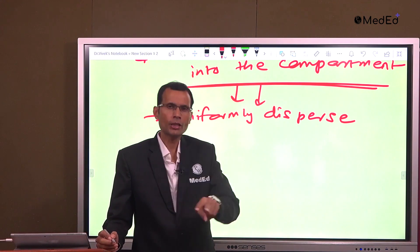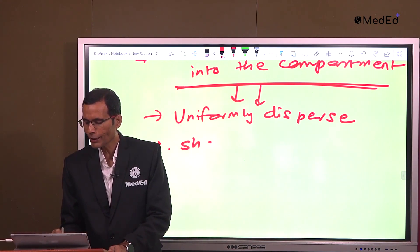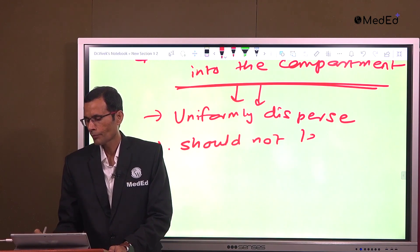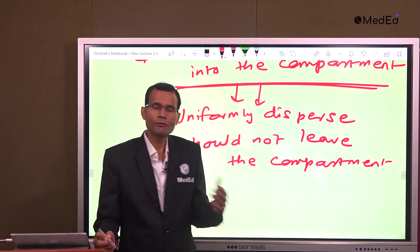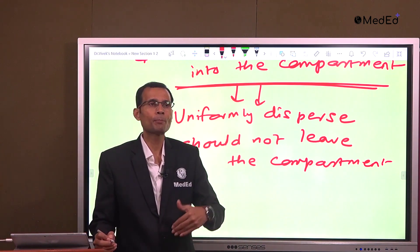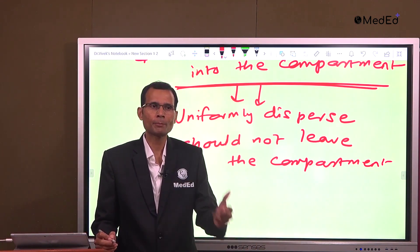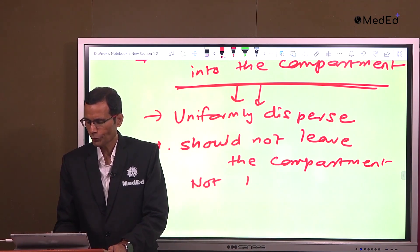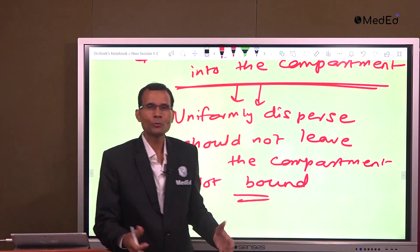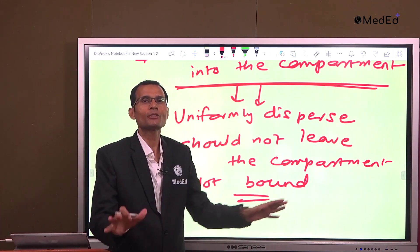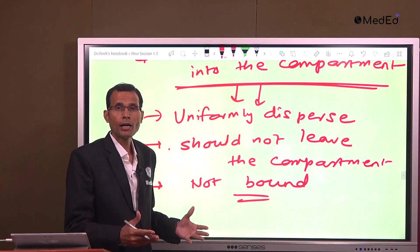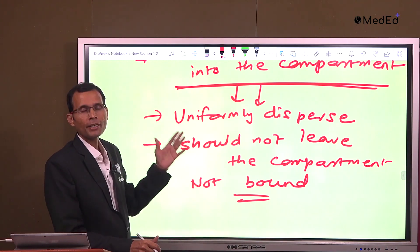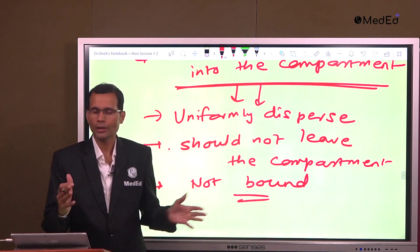The other property required is that the indicator should not leave that compartment — ideally it should stay in the compartment. Another property is that it should remain free in the compartment, meaning it should not get bound to plasma proteins or other proteins. If it gets bound, it will not spread uniformly throughout the compartment. These are the prerequisites for an indicator to measure a particular body fluid compartment.